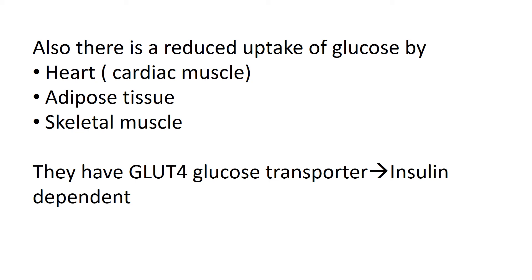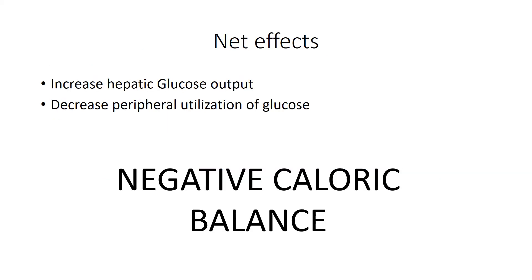Let's see the net effects of diabetes mellitus regarding carbohydrate metabolism. Due to increased rates of gluconeogenesis and glycogenolysis, hepatic glucose output is increased. Due to the inhibition of other pathways such as glycolysis, there is a decrease in peripheral utilization of glucose. Finally, this causes a negative calorie balance. Thank you for watching.